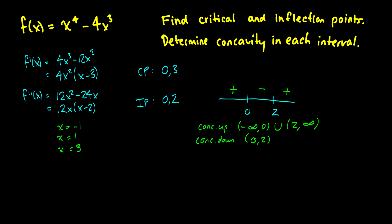If we were to draw the curve, at 2 we shift from the frowny face to the happy face, and at 0 the same kind of transition happens — so the curve looks something like that. It might not be exactly the same but that's the idea. We'll get into complete curve sketching in the next video, where we'll show you how to put this all together.